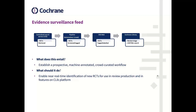The process of manually searching multiple databases for each review is time consuming, and we need to vastly improve the efficiency of this first step in review production. There is a demand for timely surveillance of new trials for both our internal review production processes and for end users of the Cochrane Library. This project will meet that demand by establishing a machine-crowd workflow that can process new trial records in an efficient way, enabling rapid use and publication.